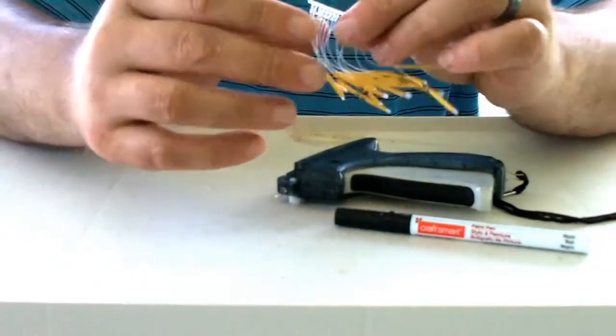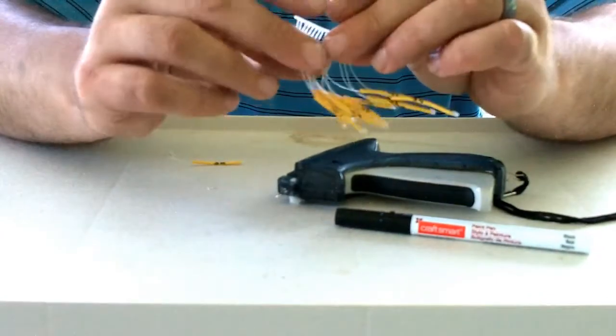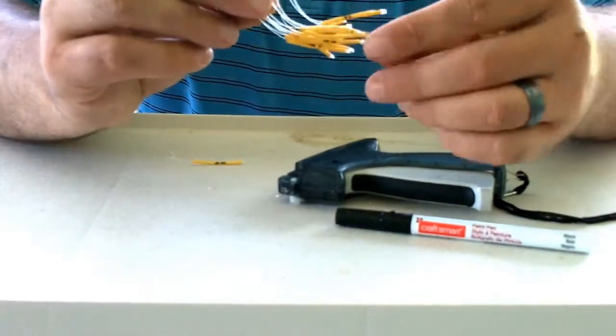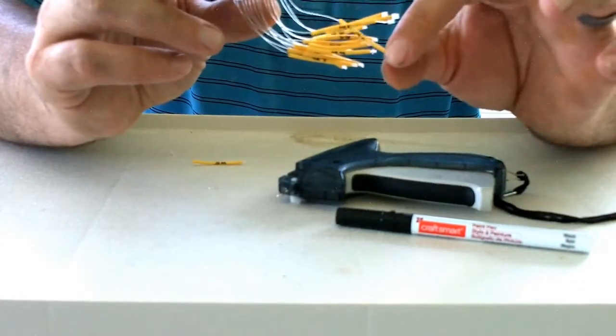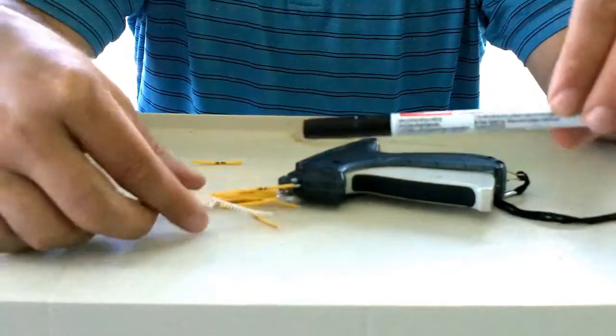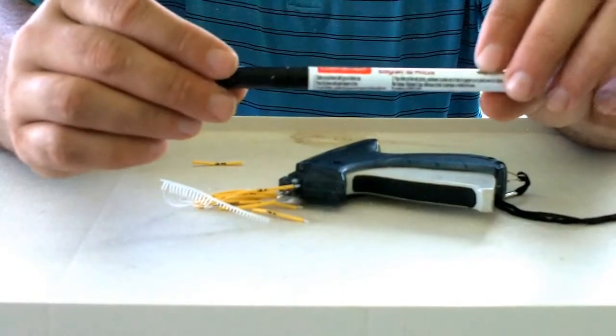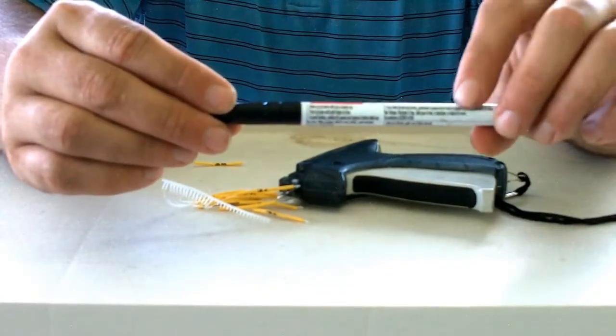I also went on eBay and I bought some two millimeter heat shrink tubing. My wife already had these from the craft store, they're called Craftsmart paint pens.